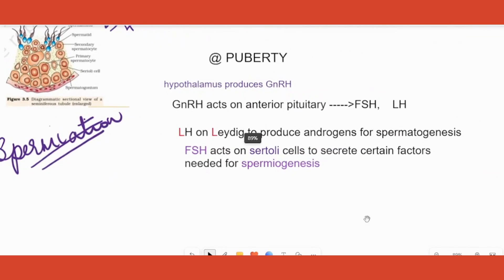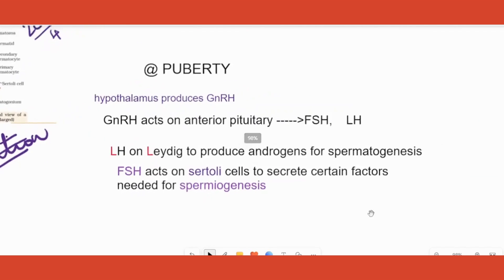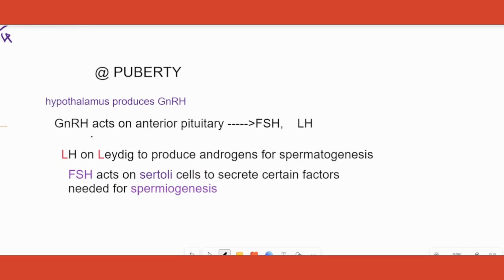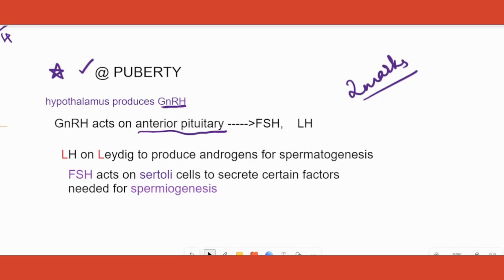Now let's cover how hormones control spermatogenesis — this is a very important question. At puberty, the hypothalamus produces the hormone GnRH, which acts on the anterior pituitary to produce FSH and LH. FSH has its function, LH has its function. LH is luteinizing hormone. LH acts on Leydig cells.